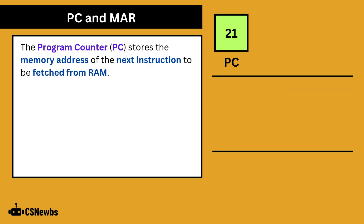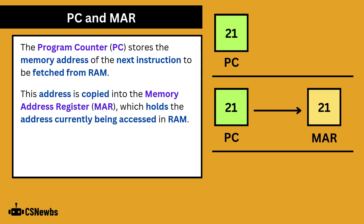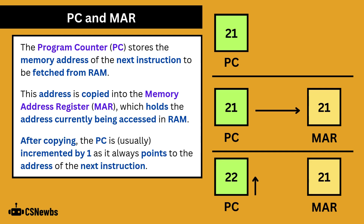Now let's look at five specific named registers used in the FDE cycle, starting with the program counter, which stores the memory address of the next instruction to be fetched from RAM. This address is copied into the memory address register (MAR), which holds the address currently being accessed in RAM. After copying, the program counter is usually incremented by one, as it always points to the address of the next instruction.